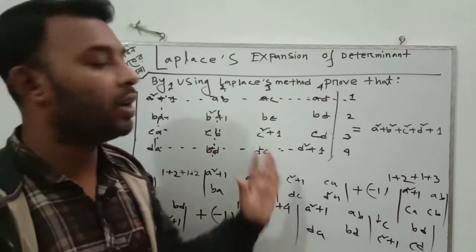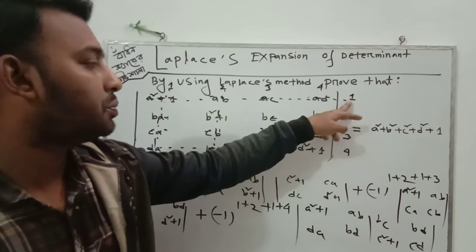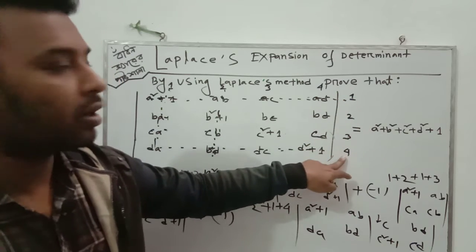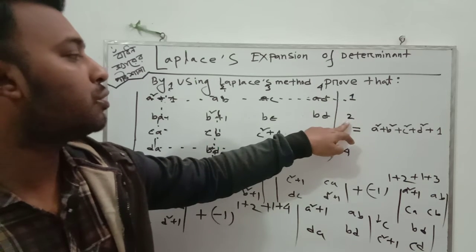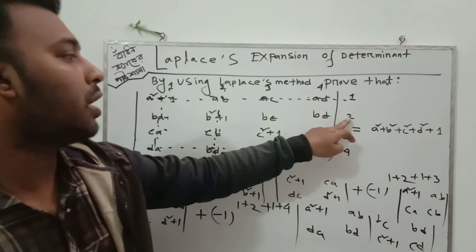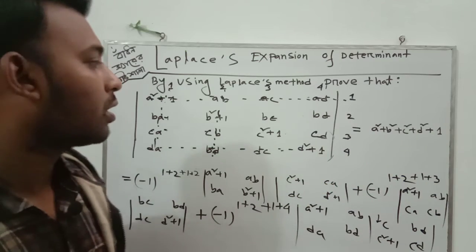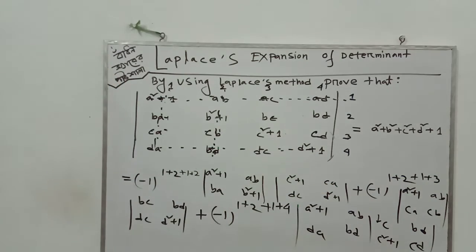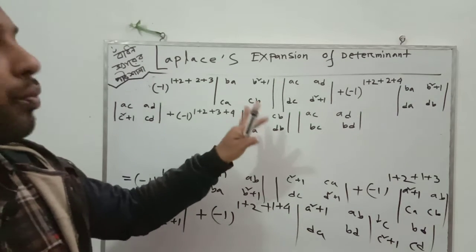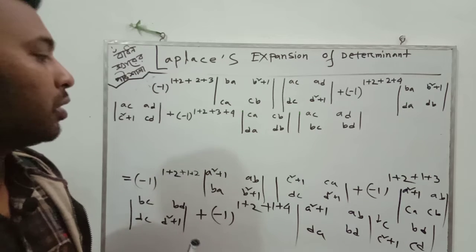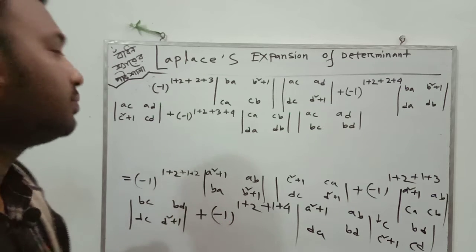Now we determine the remaining cofactors. After taking (1,2), (1,3), (1,4), we now take pairs (2,3), (2,4), and (3,4). I have written all parts of the cofactors. Now we have to solve each one using the method of determinants.